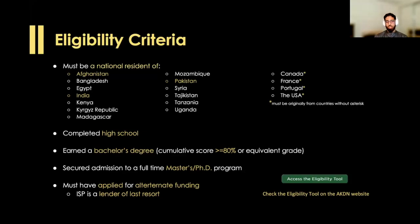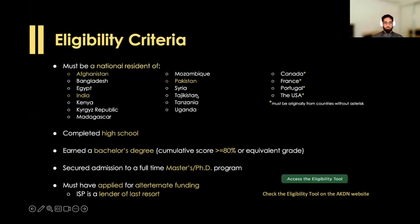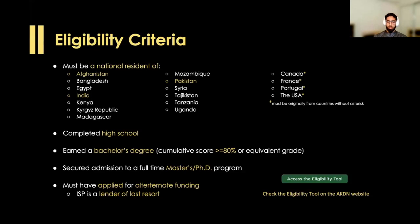This scholarship is only for master's and PhD programs. If you're admitted to a part-time program, you are also ineligible. Bear in mind, they do not want you to rely solely on this scholarship as your only source of funding — you must apply to other means as well. This doesn't mean you need to have secured other financial aid; it could just mean you've applied and are awaiting a decision. So you have to explore other means of funding for your program.